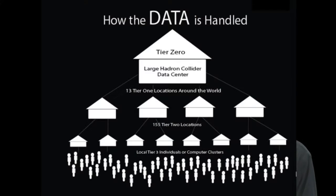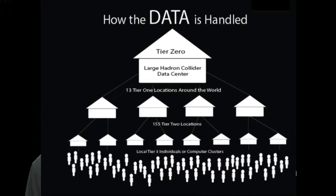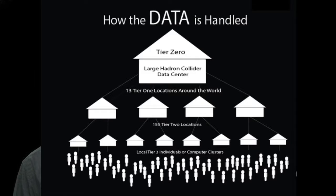From there, CERN is able to distribute the data across a worldwide network. As you can see here, CERN is the Tier 0 location and stores much of the data. Then from there, it distributes it to Tier 1, Tier 2, and then individuals.